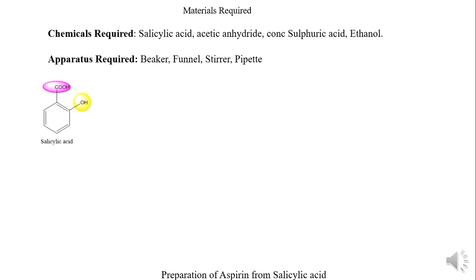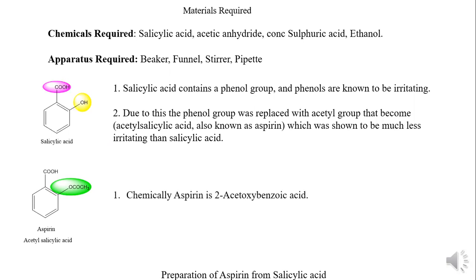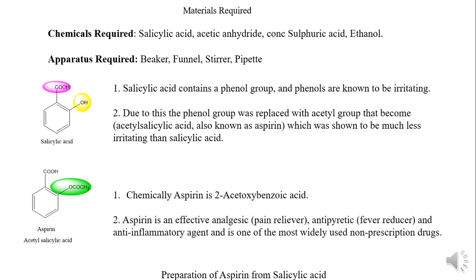I also want to discuss a brief introduction about salicylic acid. Salicylic acid contains a phenolic OH and a carboxylic group. Since the OH is irritating to the stomach lining, it was replaced with an acetyl group in aspirin so that its irritation is reduced, resulting in the formation of aspirin — chemically 2-acetoxybenzoic acid. It is an effective analgesic, antipyretic, and anti-inflammatory agent, and one of the most widely used non-prescription drugs, meaning it is easily available at a chemist shop without a prescription.